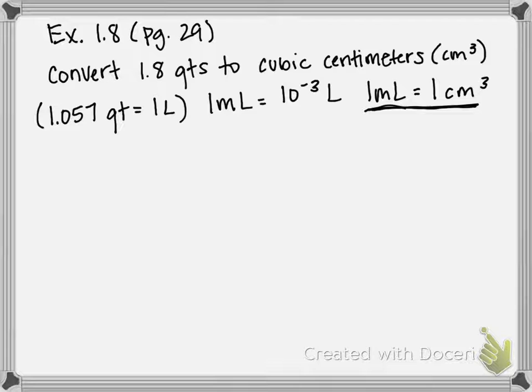So one milliliter is equal to 10 to the negative third liters. Another way you can think about it is that a thousand milliliters is equal to one liter, whatever is more comfortable for you to think about.